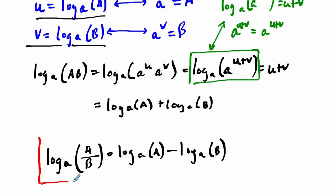So intuitively this feels nice, right, because initially log base A of A times B is the sum of their log, so it feels nice that the log base A of A divided by B is the difference of their logs.